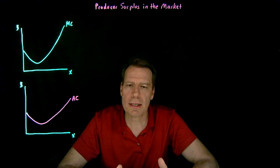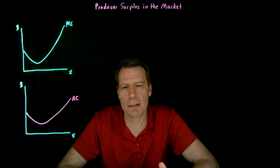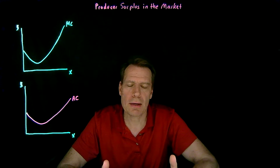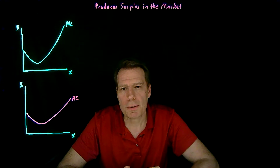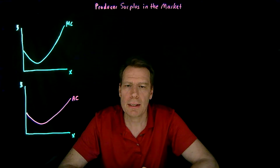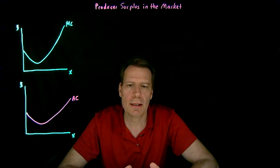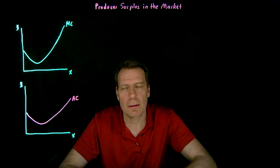We've seen how we can identify consumer surplus in the market picture and now we'll do the same for producer surplus. By producer surplus we simply mean profit. So in the short run, producer surplus is short run profit; in the long run it's long run profit. Let's start with the short run.